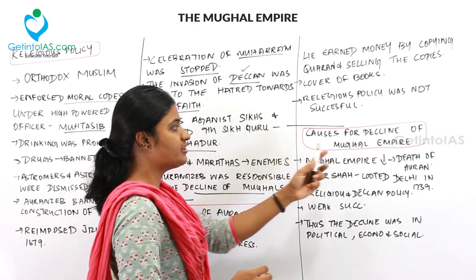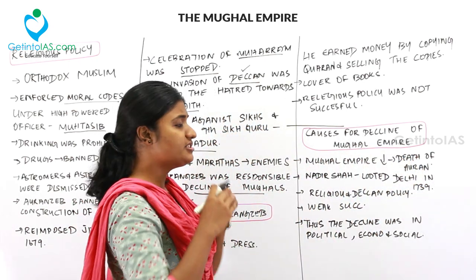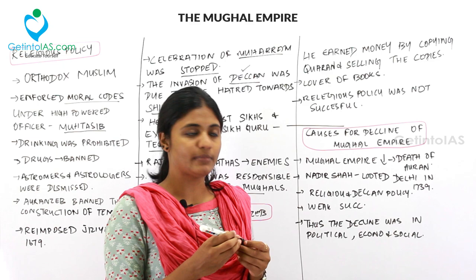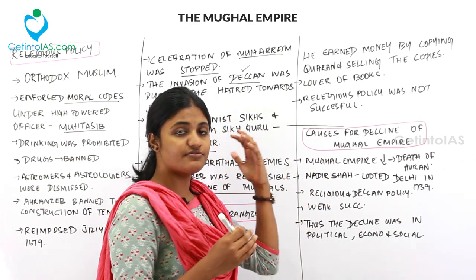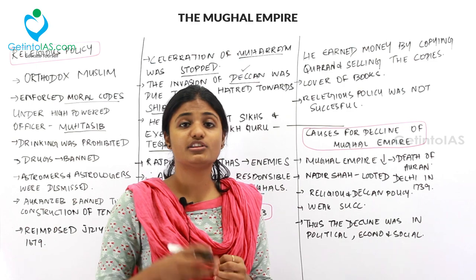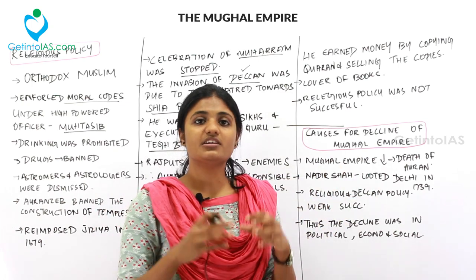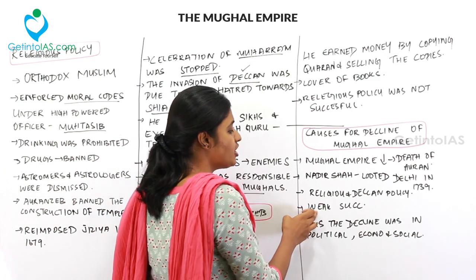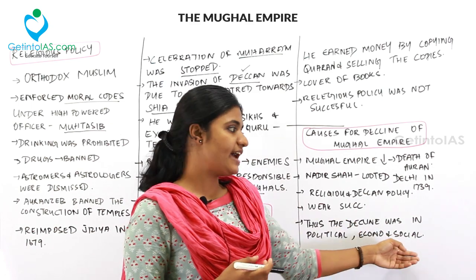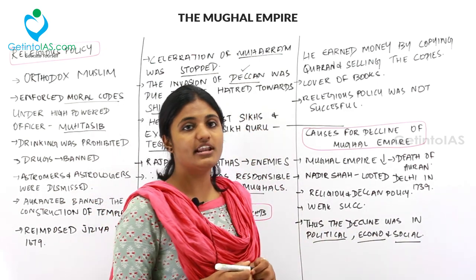The causes for the decline of the Mughal Empire include: Aurangzeb's long reign meant his successors came to power at a very old age; Nadir Shah's invasion in 1739 looted Delhi and took away the Kohinoor diamond and the Peacock Throne; and Aurangzeb's religious and Deccan policies were grave blunders. After Aurangzeb, only weak successors came. Thus the Mughal decline was political, economical, and social.